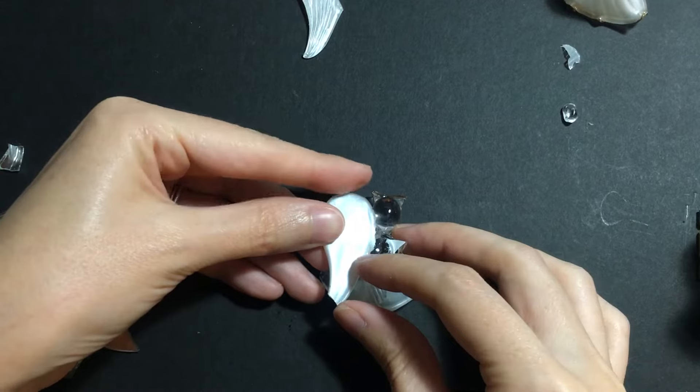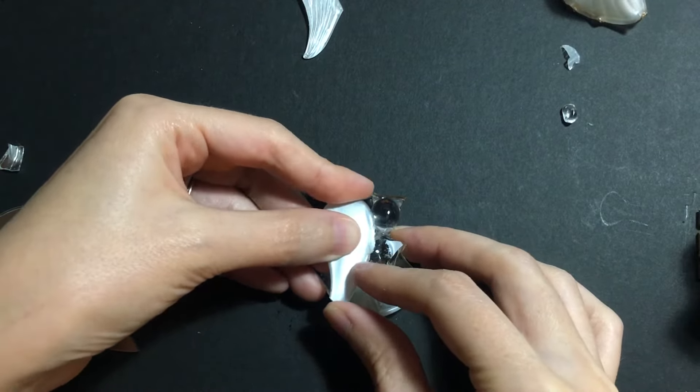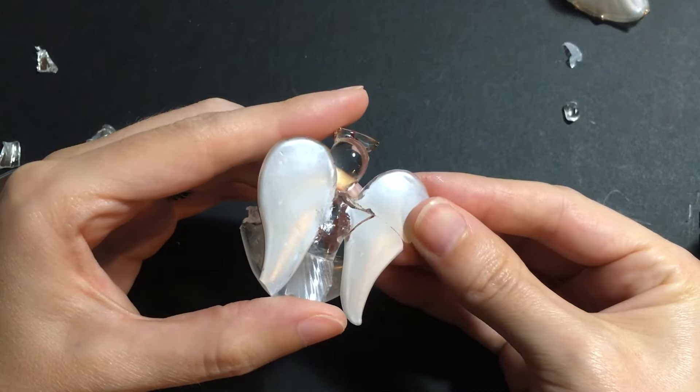The wings were pretty easy to attach. I just put them in place, hold them, wait till they set, and then move on to the next part.